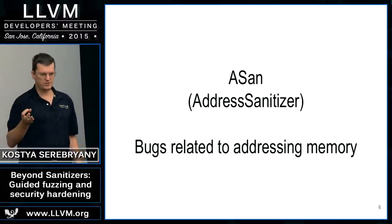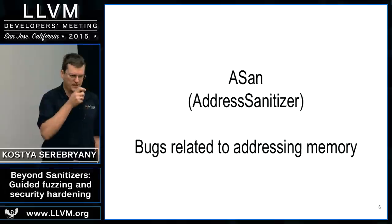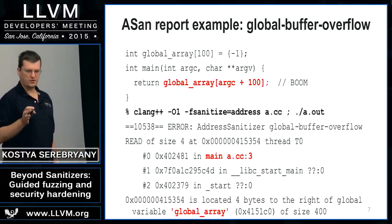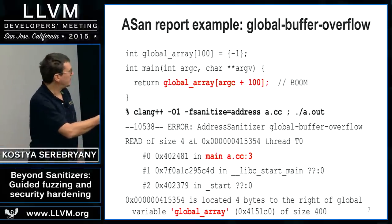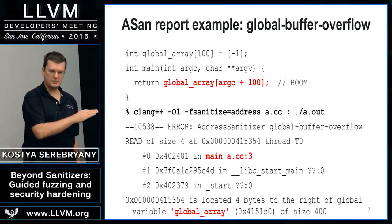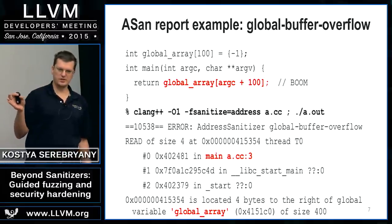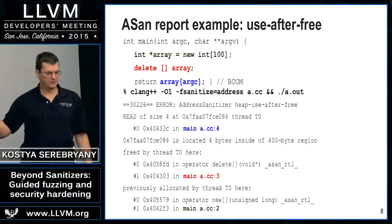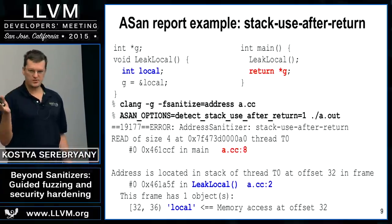Address sanitizer is a tool based on LLVM instrumentation that finds bugs related to addressing memory in C++. As a quick example, on this slide we have a global buffer overflow. If you compile with the special switch fsanitize=address and run the application, if the bug happens at runtime, the tool will report an error message with all the details you need to understand the bug. This tool finds a large variety of addressability bugs, such as use after free and stack use after returns.